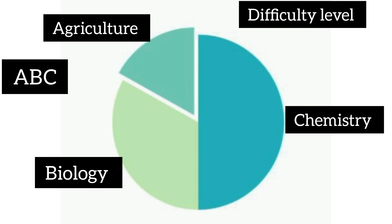In ABC stream, i.e. Agriculture, Biology and Chemistry, Chemistry was the most difficult subject.